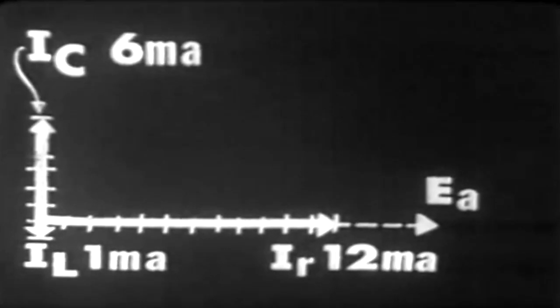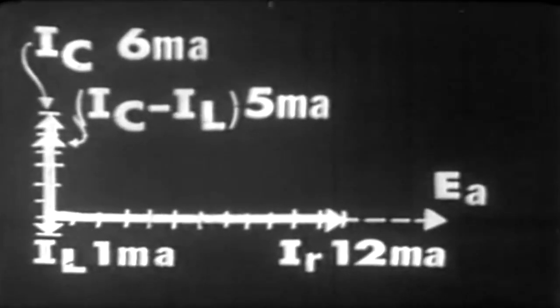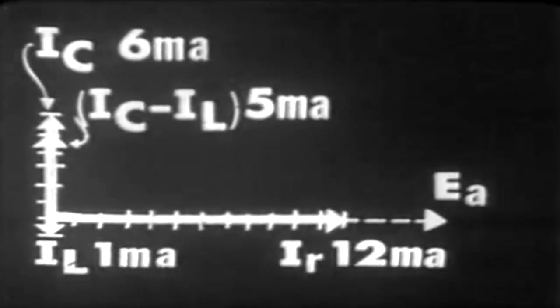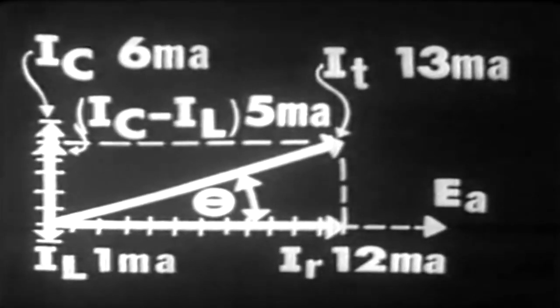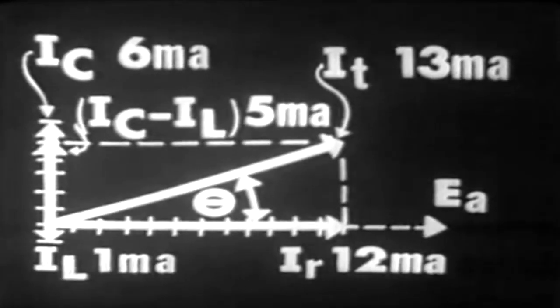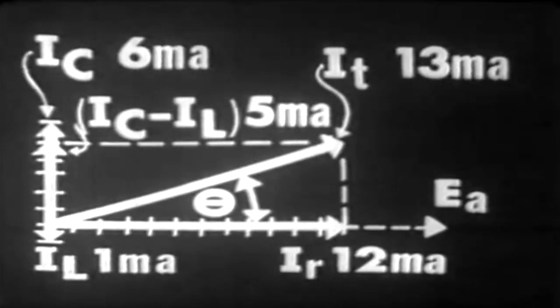Since IL and IC are 180 degrees out of phase, IL can be subtracted from IC and leave a vector sum of 5 milliamperes. We can now construct our parallelogram and draw in our current vector IT. If we measured the magnitude of our current vector IT, it would measure 13 units long, representing a total current of 13 milliamperes.